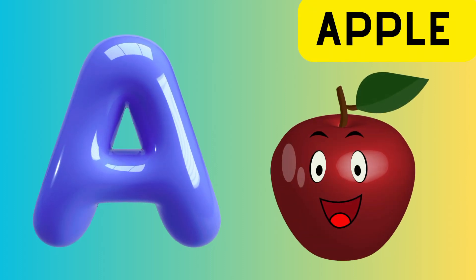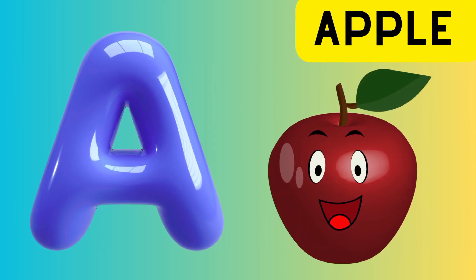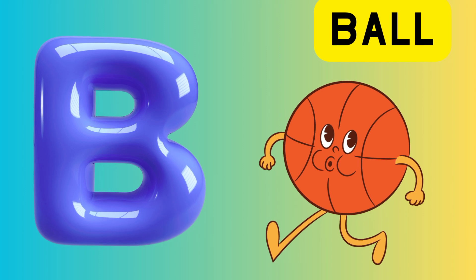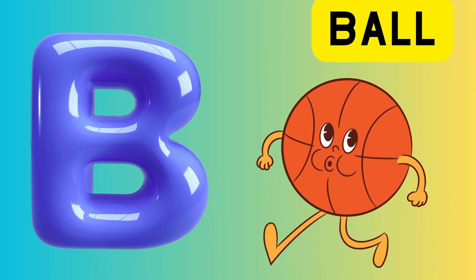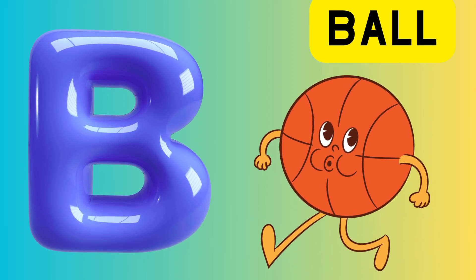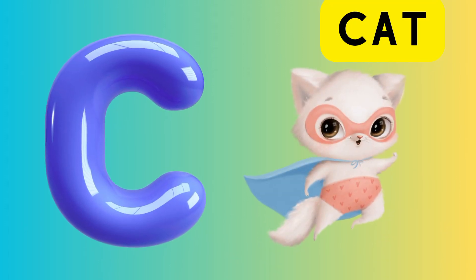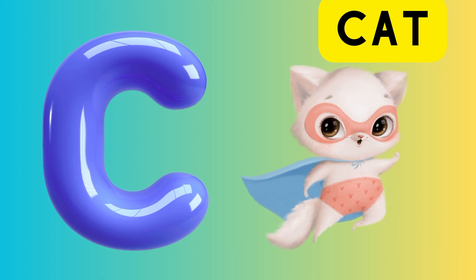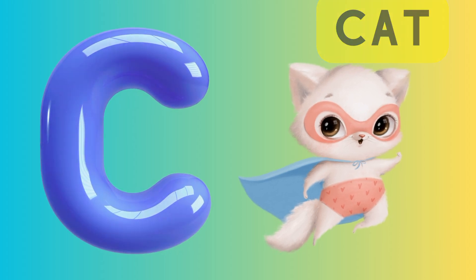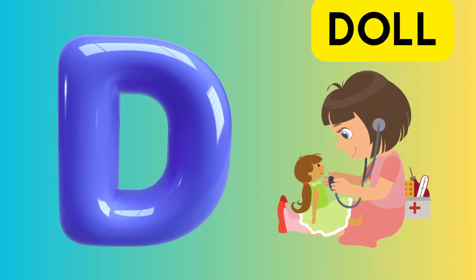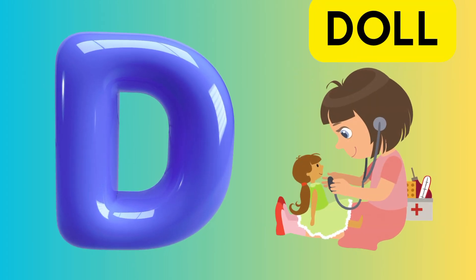A is for apple, a-a-apple. B is for ball, b-b-ball. C is for cat, c-c-cat. D is for doll, d-d-doll.